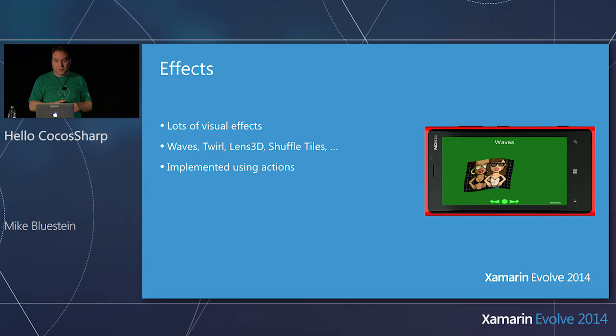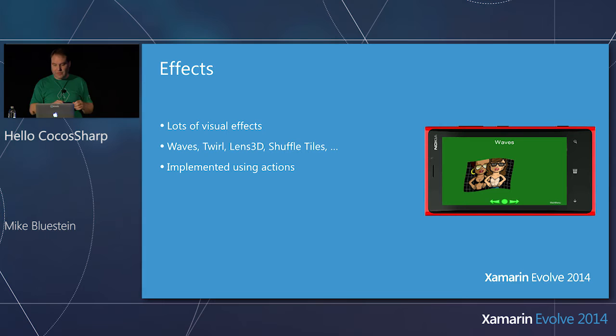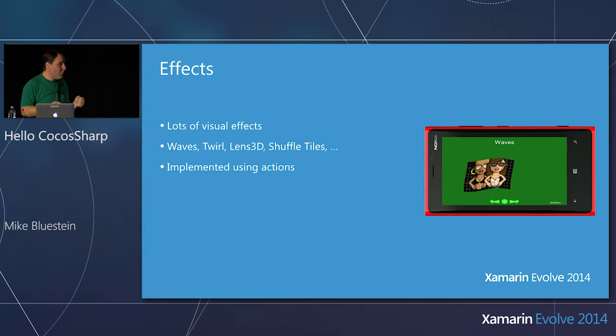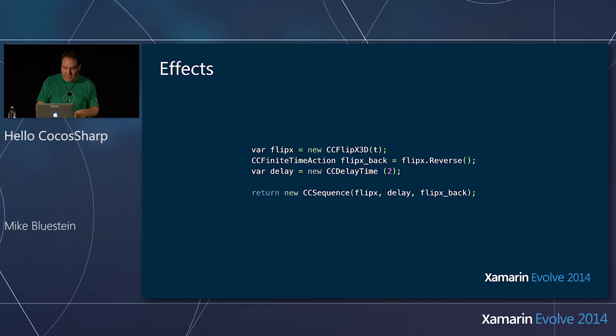Along with actions, we have these effects — and some are pretty advanced. Like the Waves effect that just waves an image around the screen. There's a twirling one that almost looks like you're going into another dimension, and a Lens 3D that blows it up like a fisheye. It's cool that you have these out of the box. They're implemented as actions, so they can be used right in the action chain, put right into the scene — very declarative, very high-level, easy to do.